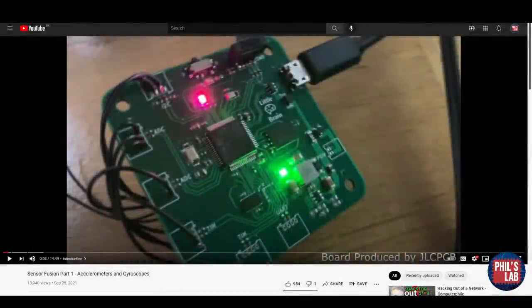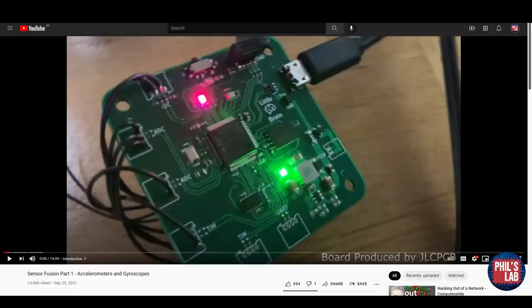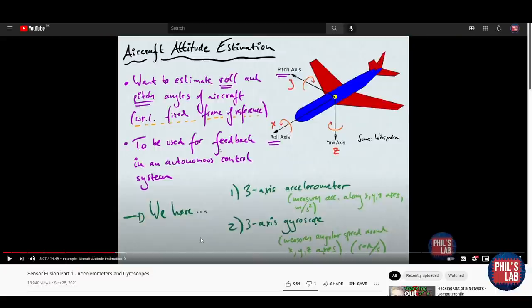In the last video on sensor fusion, we looked at why we need sensor fusion, as well as individual sensors such as accelerometers and gyroscopes to see the problems they have when estimating something like the attitude of an aircraft, for example, the roll and pitch angles.